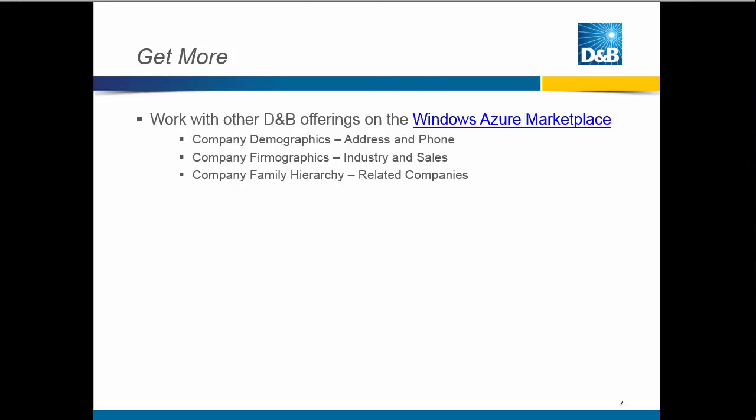You can actually do even more once you have the DUNS number. Dun & Bradstreet has other services you can look at on the Windows Azure Marketplace — things like company demographics, company firmographics (for example, their industry, information about sales), and family hierarchy, which is related companies. This can make your customer list even richer and more usable. I'm Lynn Langett for D&B. Enjoy the new Business Verification from Excel, and have a great day.